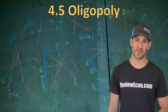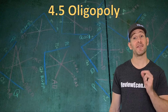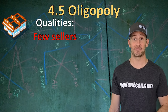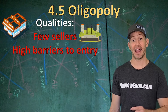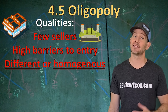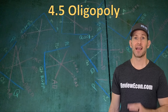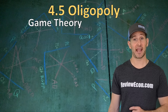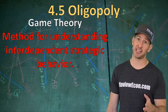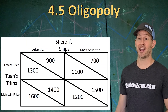The last market structure we're going to learn about is oligopoly. The qualities of an oligopoly: a few sellers dominating the market, usually less than 10. Barriers to entry are still quite high and the goods could be different or homogenous. They do have the ability to impact price through strategic behavior. Game theory is how we best understand oligopoly behavior — it is a method for understanding interdependent strategic behavior between entities, in this case businesses. You could see a payoff matrix.